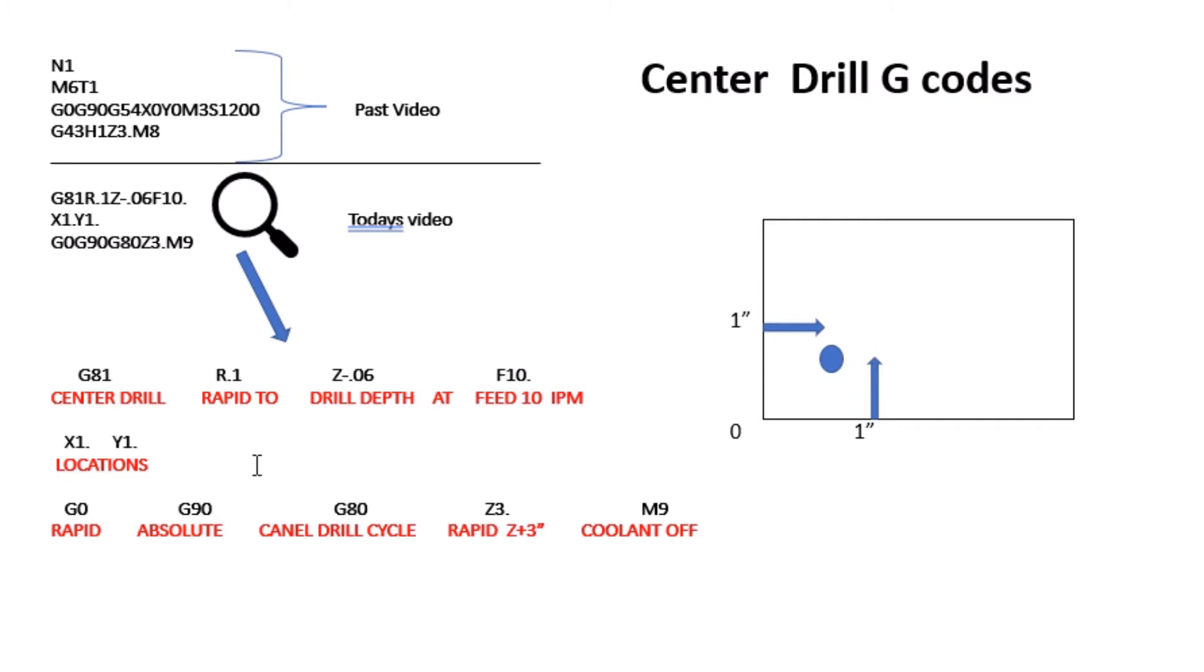There's really not a lot of them to remember, and you can get a lot more done than you would if you had to go up, down, left, right. You can enter variables, which we're about to see here. G81 means center drilling—you're telling your machine I want to center drill.